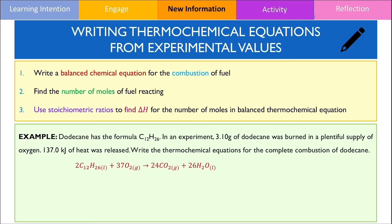The balanced chemical equation for the combustion of dodecane should look like this. In this equation, dodecane should be in the liquid state because it's a large hydrocarbon with a high boiling point compared to simple hydrocarbons. From here, I'm going to calculate the number of moles by dividing the mass with its molar mass, giving me an answer of 1.8235 × 10⁻² moles.